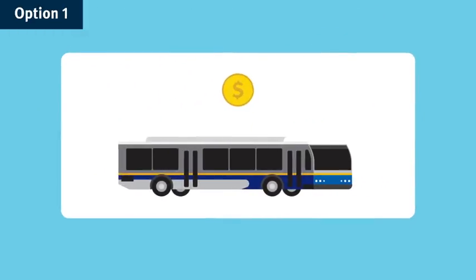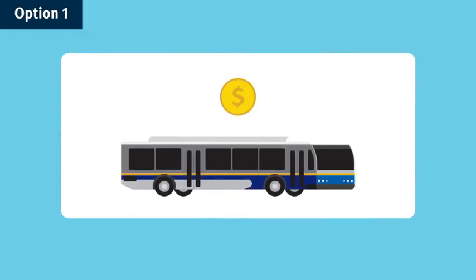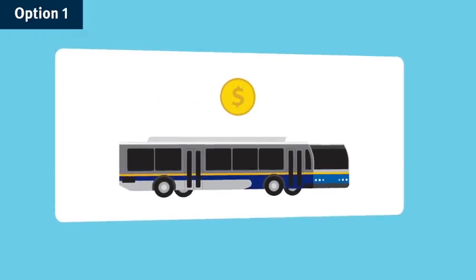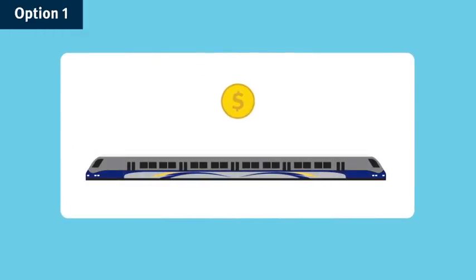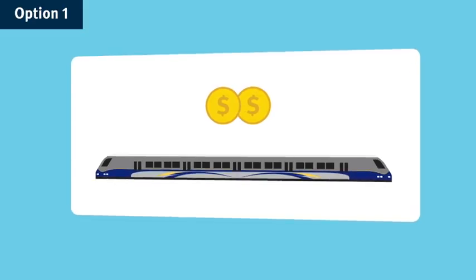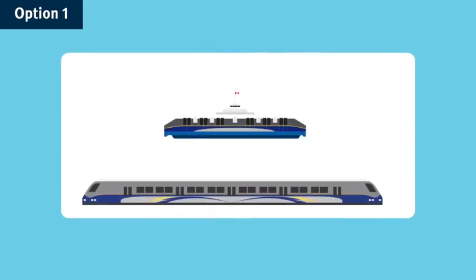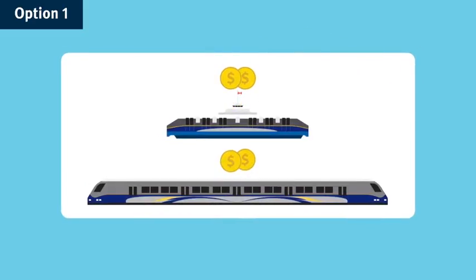Under this structure, bus trips would cost around the same as they do now, while fares for long SkyTrain trips that today fall within one zone would increase. Fares for CBus and any SkyTrain trips that cross a zone boundary by one or two stations would decrease.